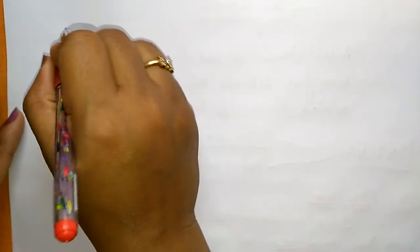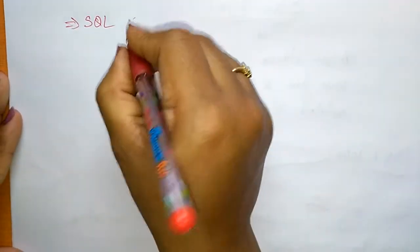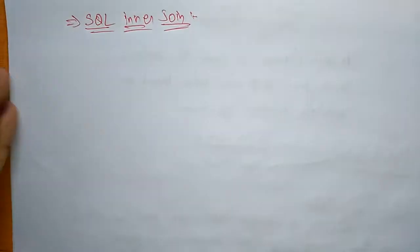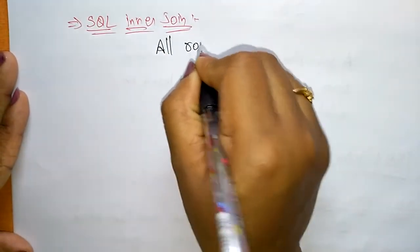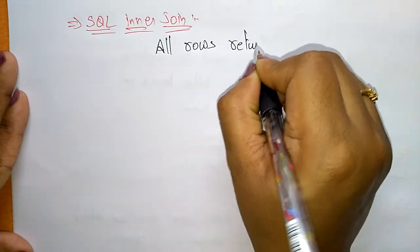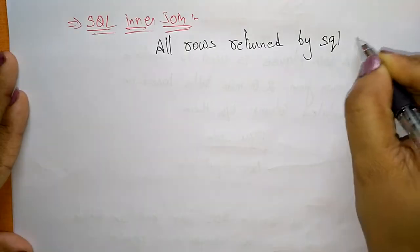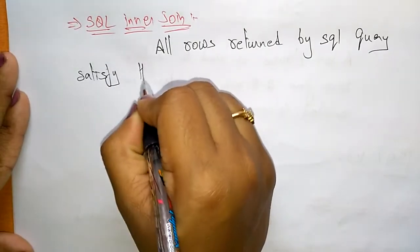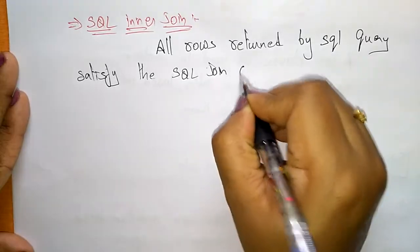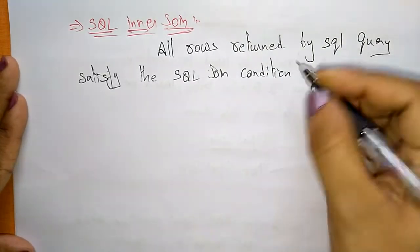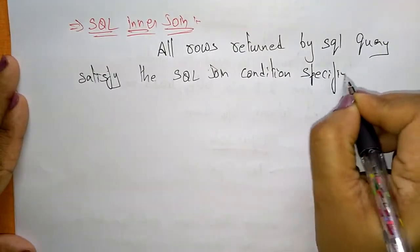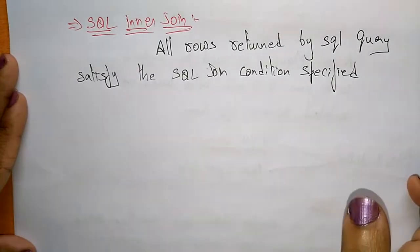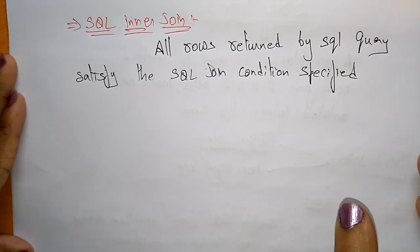Now let us see what is SQL inner join. In an SQL inner join, all rows returned by the SQL query satisfy the SQL join condition specified. If that condition is satisfied, those rows will be returned by the SQL query.